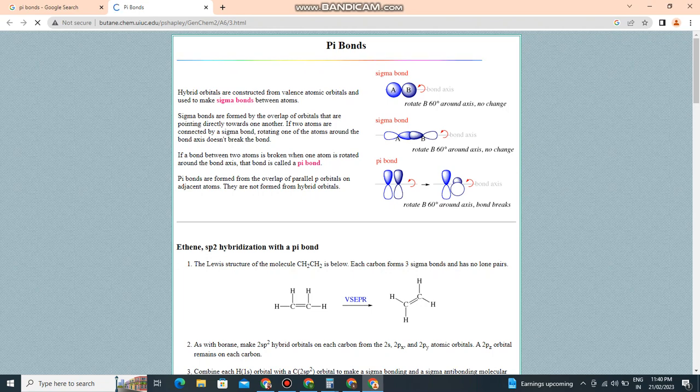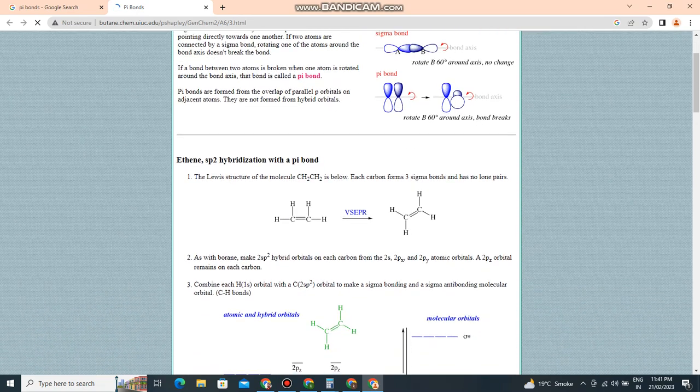Sigma bonds are formed by the overlap of orbitals that are pointing directly towards one another. If two atoms are connected by a sigma bond, rotating one of the atoms around the bond axis does not break the bond.